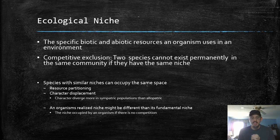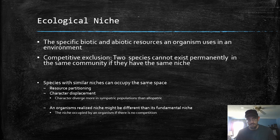An organism's realized niche might be different than its fundamental niche. The realized niche is the niche that the organism is actually doing in that habitat. A fundamental niche is the niche occupied by an organism if there is no competition. When there is competition, the fundamental niche may not be possible — so that organism might experience resource partitioning, might evolve slightly different traits and undergo character displacement, and might have a different realized niche than its fundamental niche.